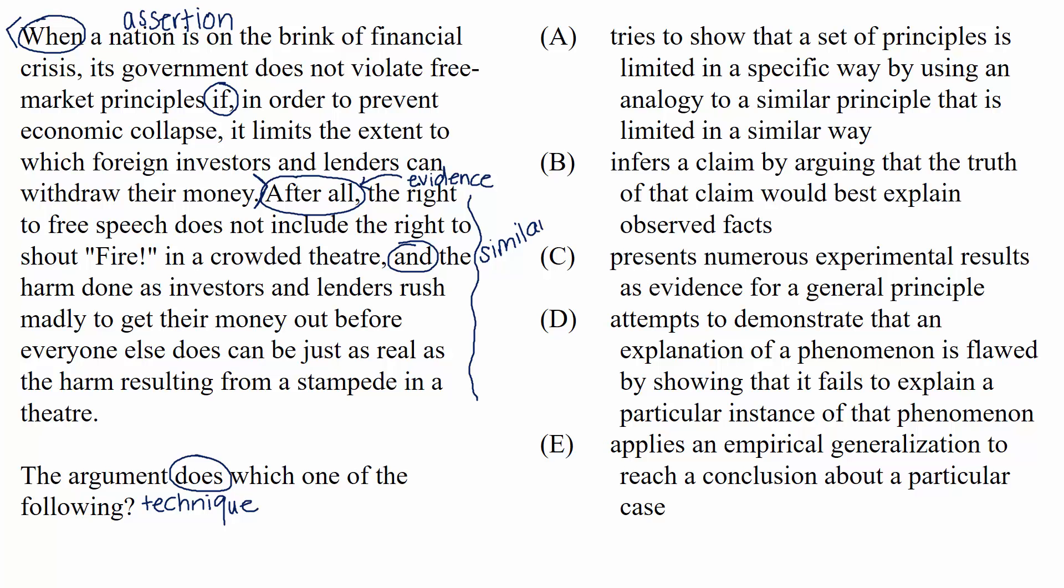In other words, the arguer believes that even though the government should normally act in one certain way, the government is justified in acting in a different way when the nation is facing financial crisis. And to try to prove this, the arguer shows that even though people normally have the right to free speech, you shouldn't exercise that right in a specific instance. So what's our prediction for what the arguer is doing? The arguer is making an analogy in order to make a case for a specific scenario. And that's what the question means when it asks, the argument does which one of the following? So we can find the match for the prediction in the choices.